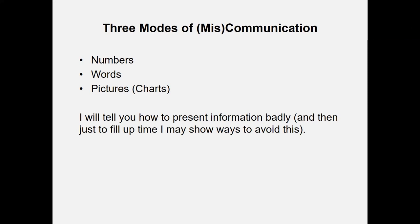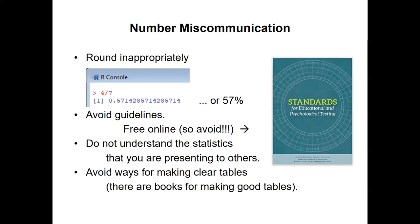I'm going to concentrate on three different modes of miscommunication. You can miscommunicate with your audience in several ways: one is numeric — you can show numbers that really don't convey what you want, sometimes by choosing the completely wrong numbers. Then there are the words you choose, which can also fail to help. And I'm going to spend more time on the pictures, because that's more fun and you can have a lot more fun trying to confuse people with pictures.